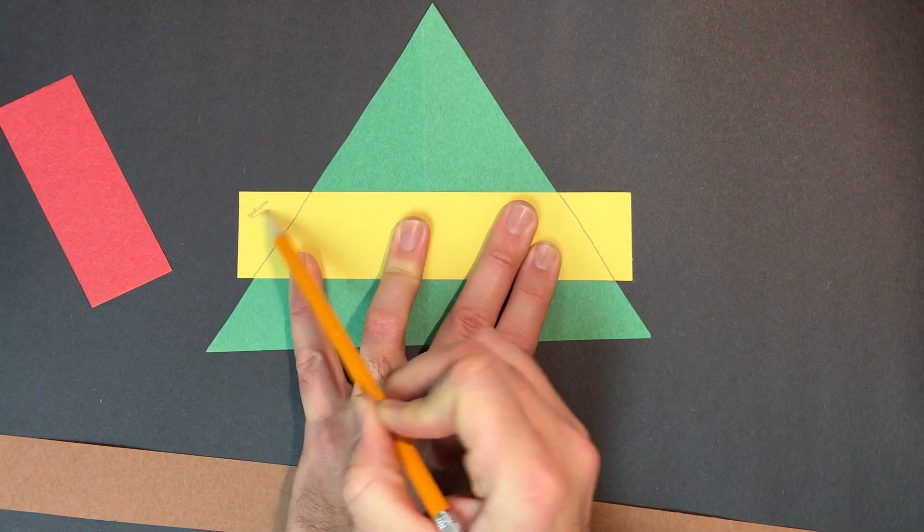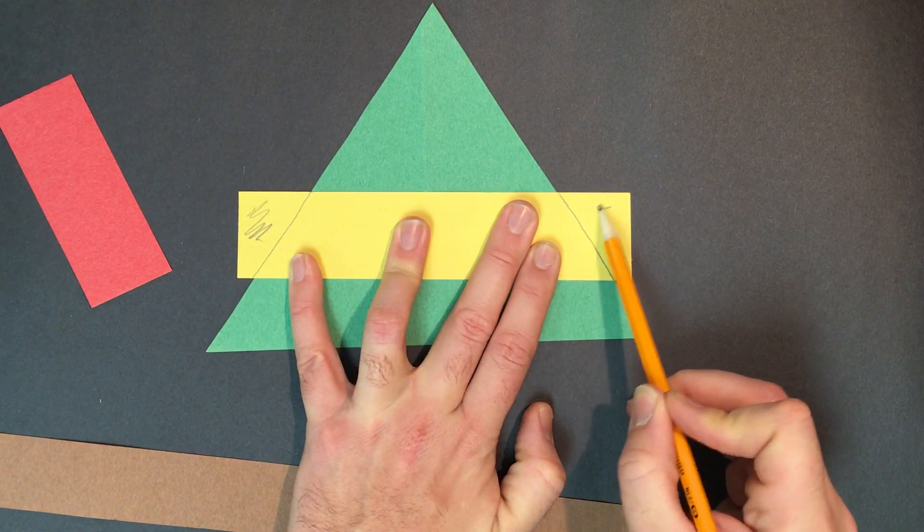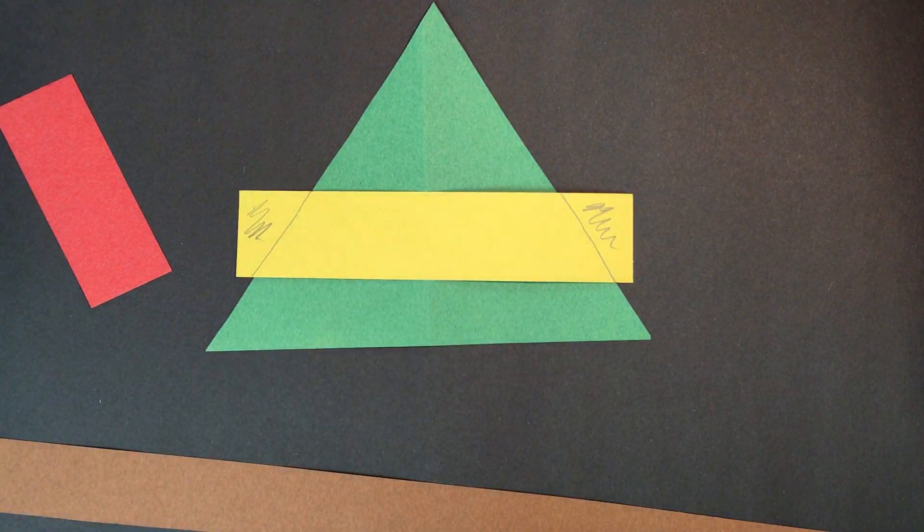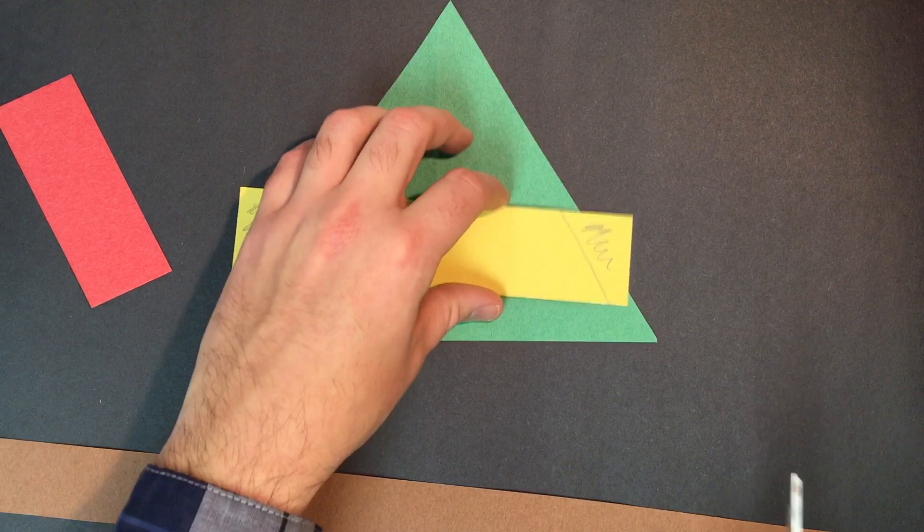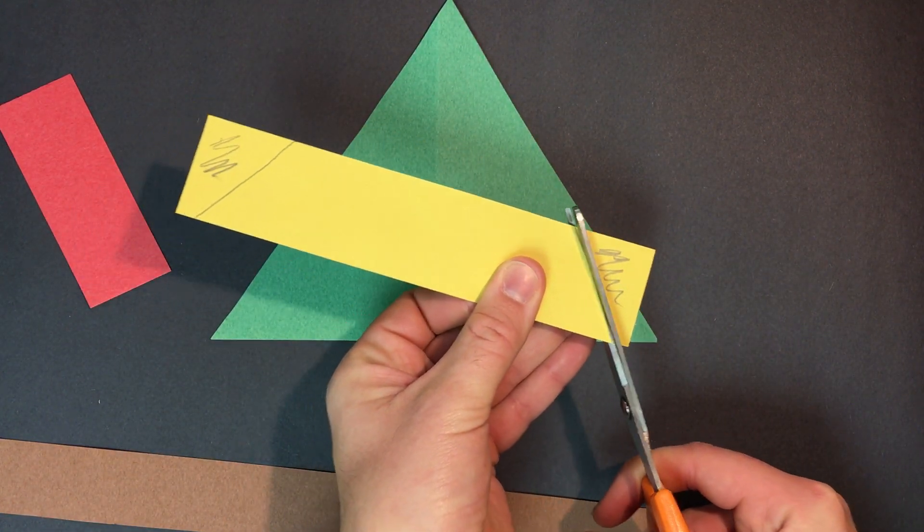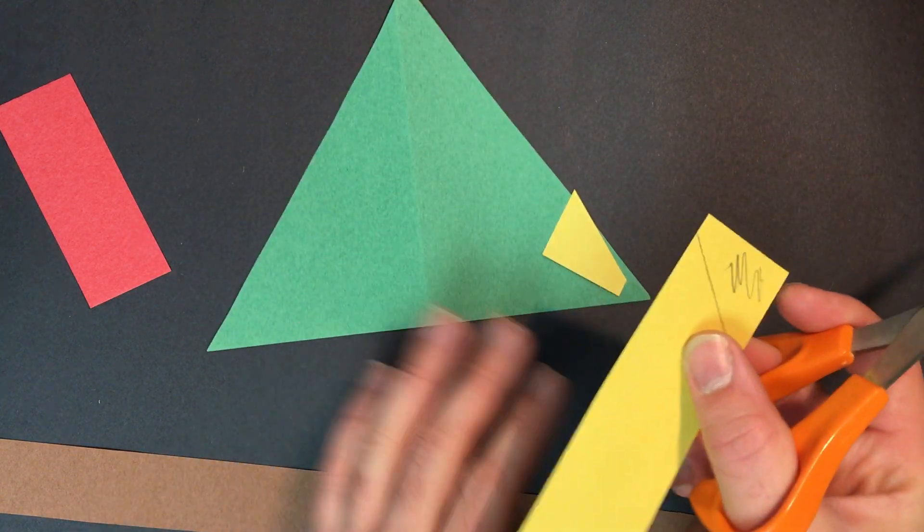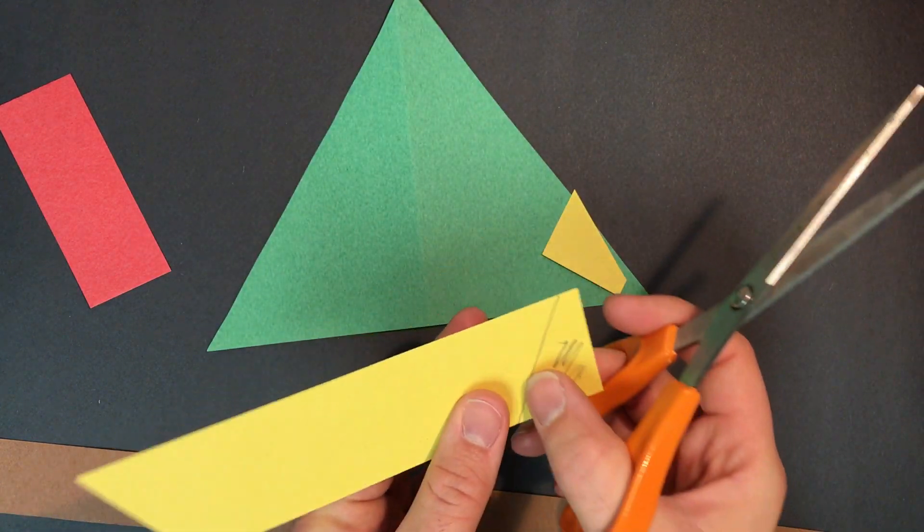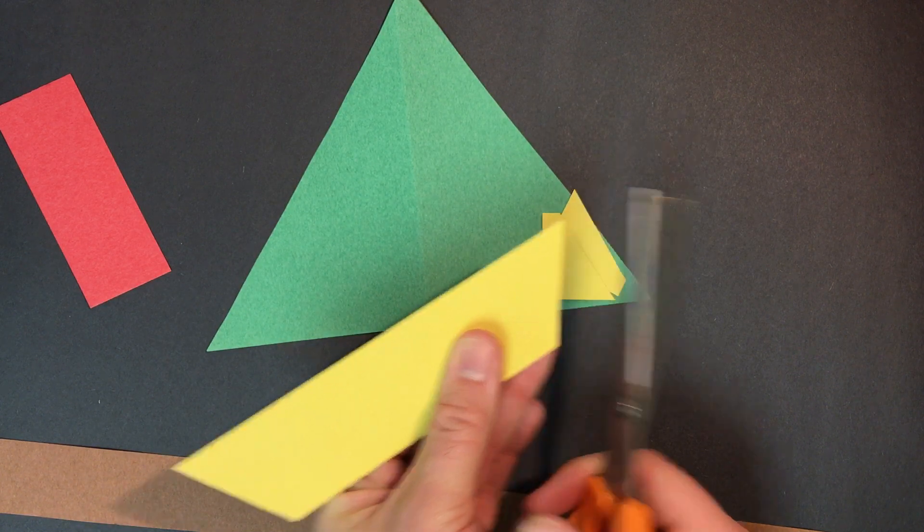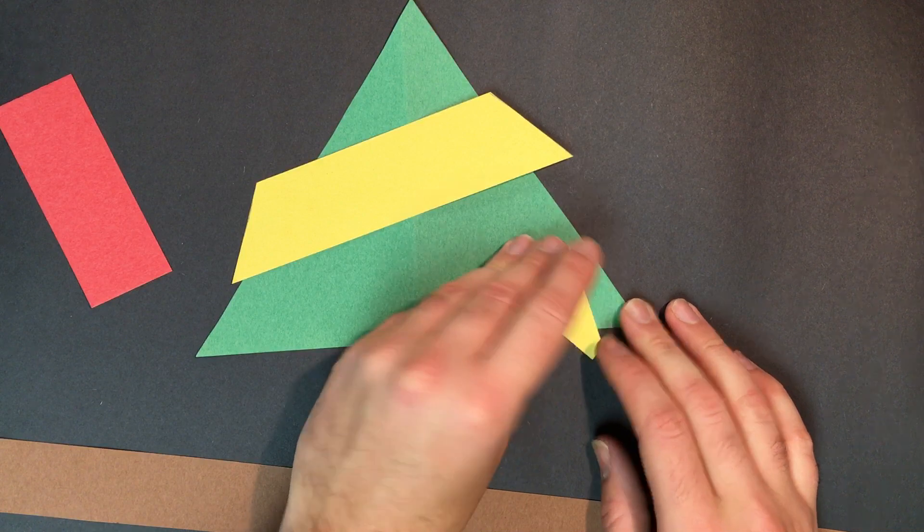The next part, we need to remove this piece and we need to remove this piece. So use your scissors and cut those parts off. Try to cut nice on the line, right there. Then we're gonna cut right here like that.